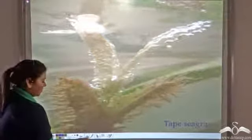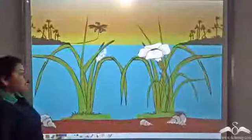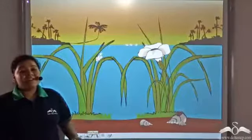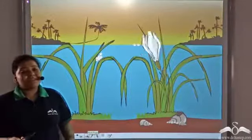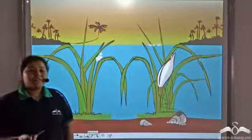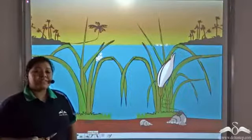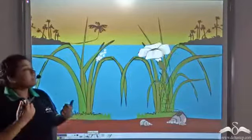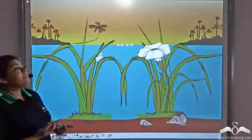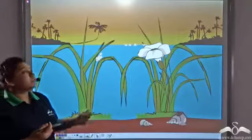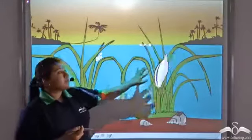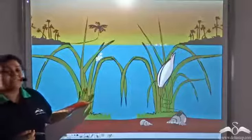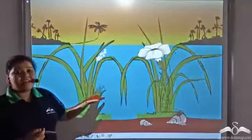Well, in this case, water becomes the transporter. Water transports the male reproductive part or the entire male flower to the female flower. In this case, we see the Vallisneria flower.